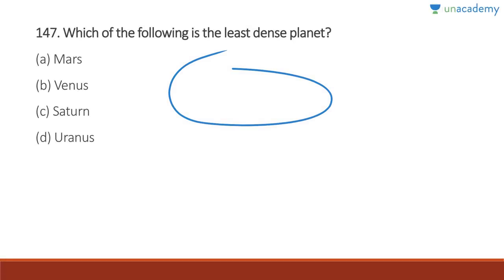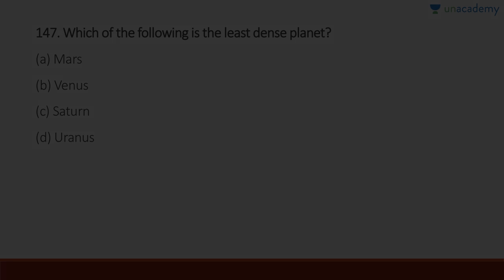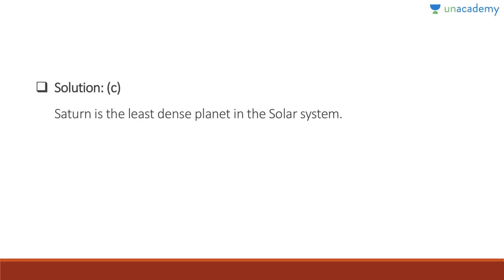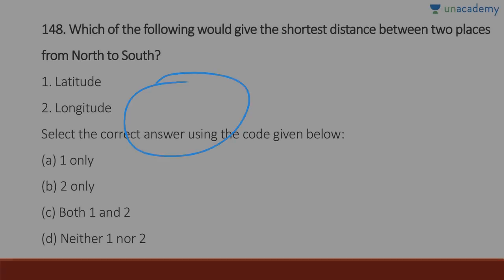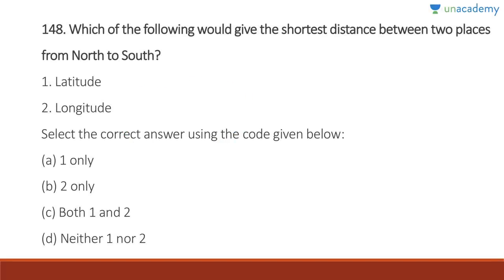Question 147: Which is the least dense planet? Saturn is the least dense planet. If there were a large enough ocean, Saturn would float on it because its density is even less than water. Saturn is the least dense planet in the entire solar system.